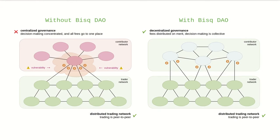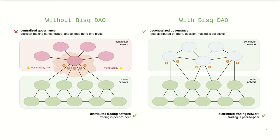Here we have a depiction of the BISC network without the BISCDAO on the left and with the BISCDAO on the right. First, let's look at the bottom. These nodes make up the trader network, and they're actually the same on the left and the right, because the trader network is already in pretty good shape — it's distributed, peer-to-peer, and resilient. If one trader goes offline, the network adapts and continues on just fine.